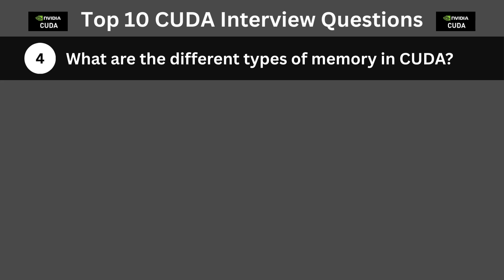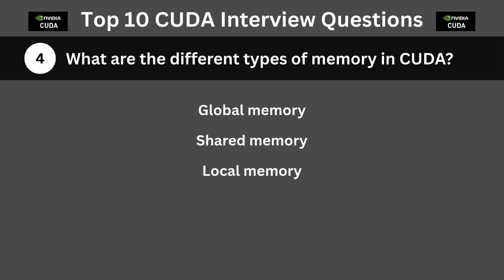The next question is: what are the different types of memory in CUDA? There are five main types of memory. Global memory, which is accessible by all threads but is slow to access. Shared memory, which is fast and accessible within a block. Local memory, which is private to a thread for register spills. Constant memory, which is read-only memory shared across threads. And texture memory, which is cached and optimized for two-dimensional and three-dimensional access.